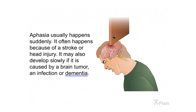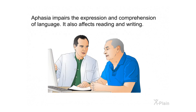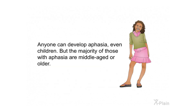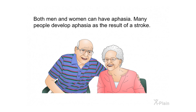Aphasia impairs the expression and comprehension of language. It also affects reading and writing. Anyone can develop aphasia, even children, but the majority of those with aphasia are middle-aged or older. Both men and women can have aphasia. Many people develop aphasia as the result of a stroke.